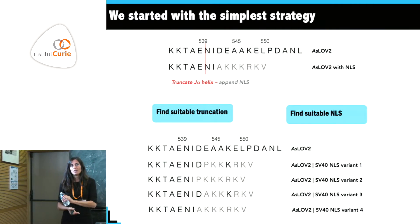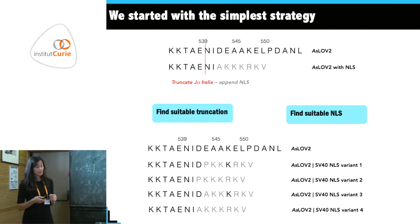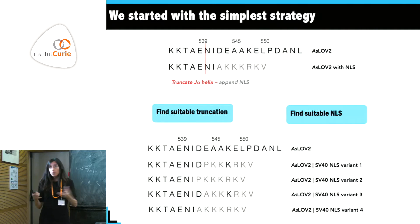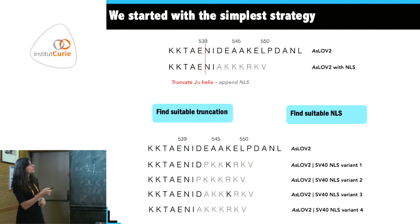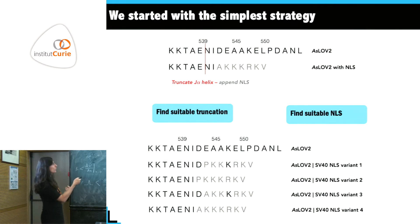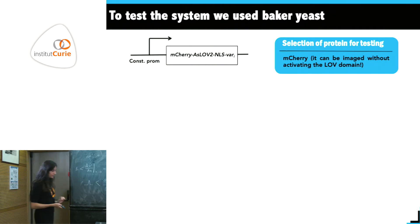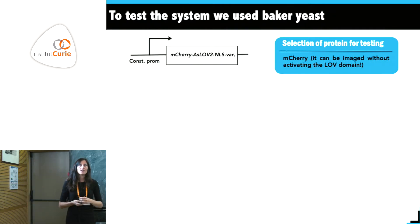We used the SV40 NLS as a starting point, deciding to change one residue here and there — for instance keeping a lysine matching what was found in the LOV domain. This was a very small library of constructs tested in yeast, because yeast is a eukaryote with a nucleus but much faster to grow and easier to work with than mammalian cells.